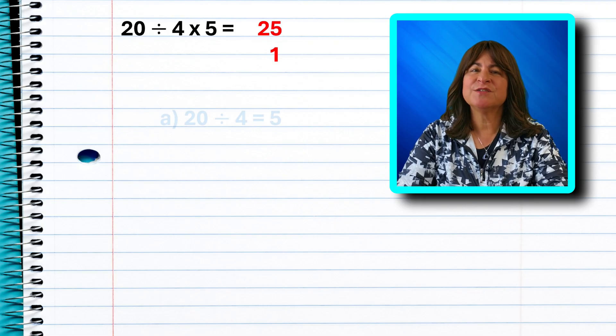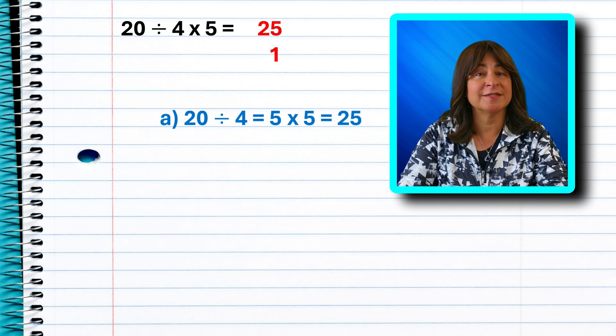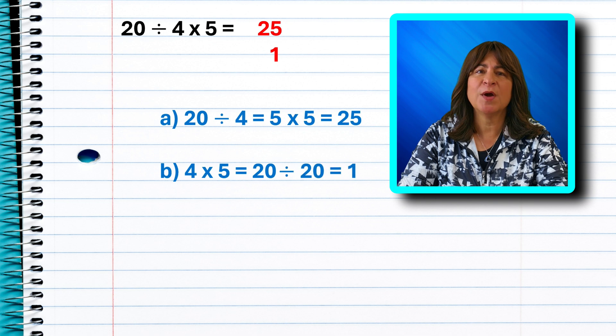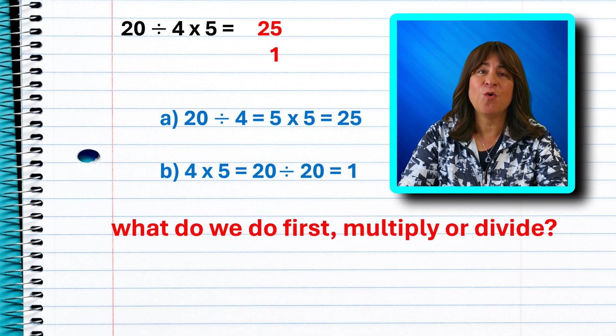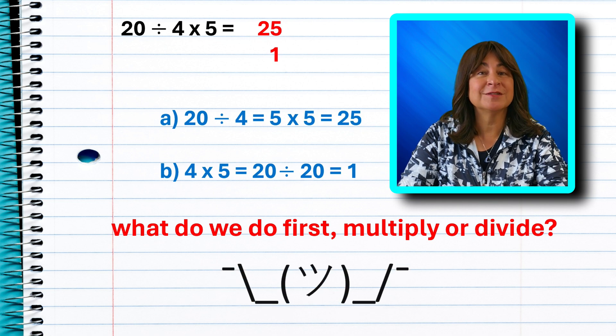Is it 20 divided by 4, which is 5, then multiply by 5, so we have 5 times 5 or 25 as the answer? Or do you multiply first and then divide? Is it 4 times 5 is 20 and then 20 divided by 20 is 1? Is the answer 25 or 1? What do you do first? Multiply or divide?